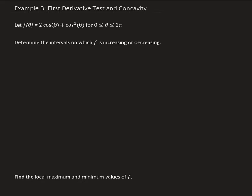First we need to find the critical numbers by taking the derivative of this function with respect to theta and setting that equal to 0. So f prime of theta equals: the derivative of cosine is minus sine, so we have minus 2 sine theta. Then we take the derivative of cosine squared — we bring down the 2 and take the derivative of cosine, which gives us a negative sign — so we get minus 2 times sine theta times cosine theta.